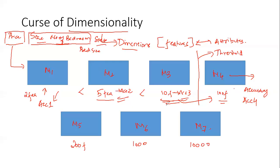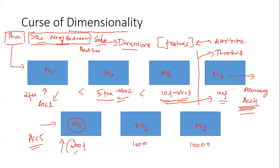After ACC4 decreases, if I create model M5 with two hundred features, I get ACC5, which is worse than ACC4. The same pattern continues — as we go to one thousand and then ten thousand features, accuracy keeps decreasing after the threshold value.